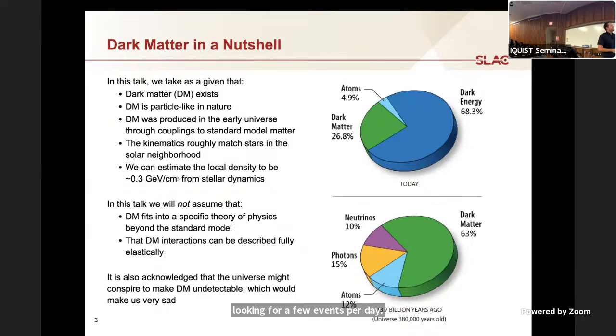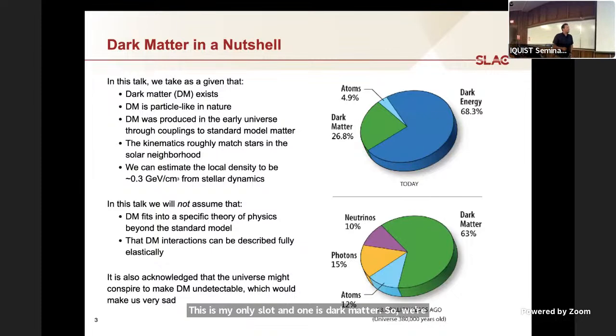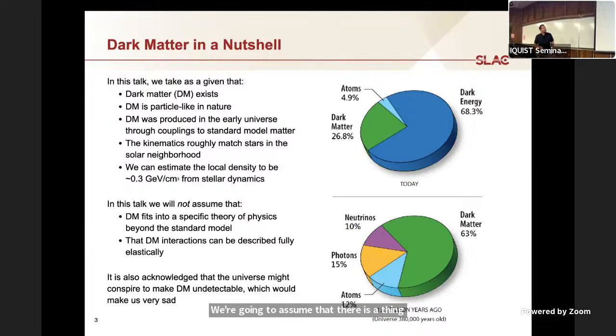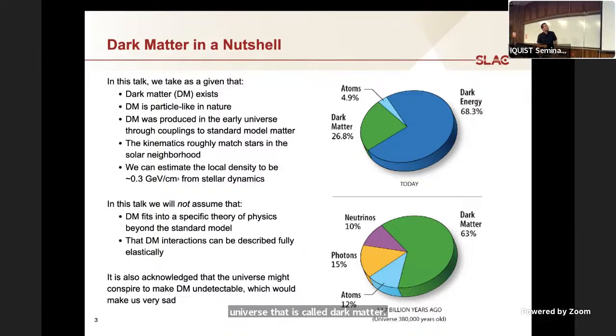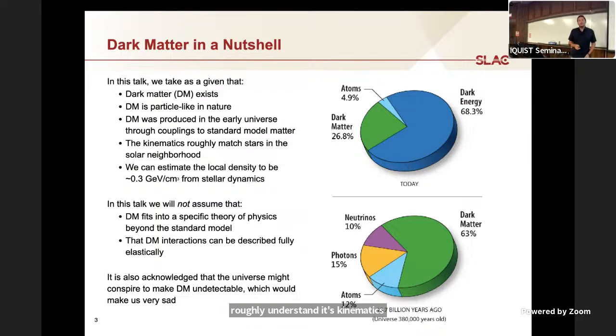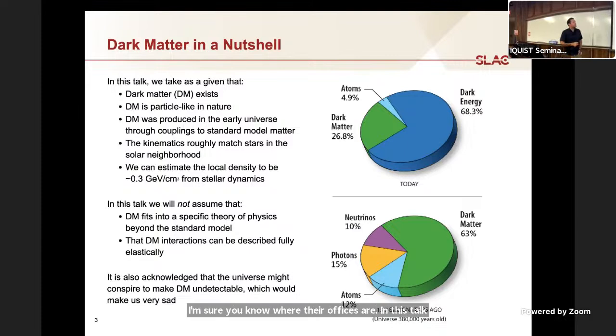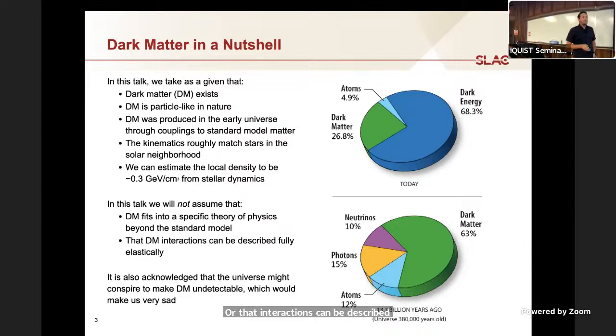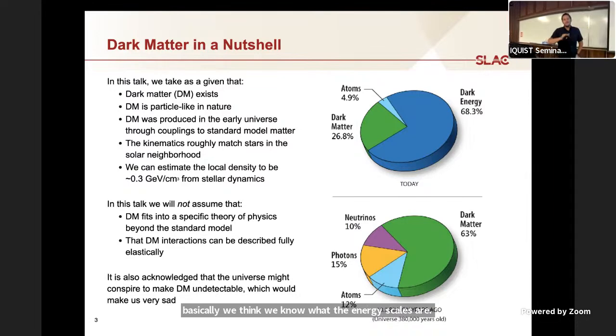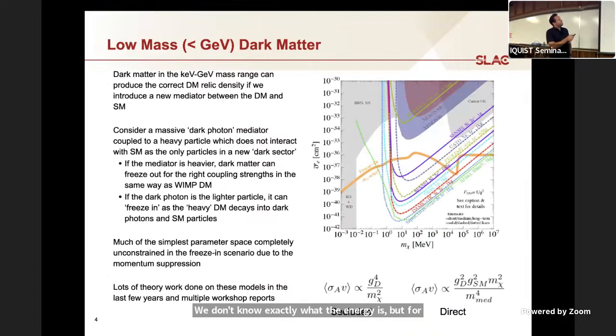This is my only slot on dark matter. We're going to assume many things. We're going to assume that there is a thing that makes up roughly a quarter of the energy density of the universe that is called dark matter. We're going to assume it's a particle, produced in the early universe and that we roughly understand its kinematics. These are all many assumptions that you could quibble with. I'm going to redirect all those questions to Yoni and Jesse. In this talk, we'll not assume that it fits into a specific theory or that interactions can be described elastically.